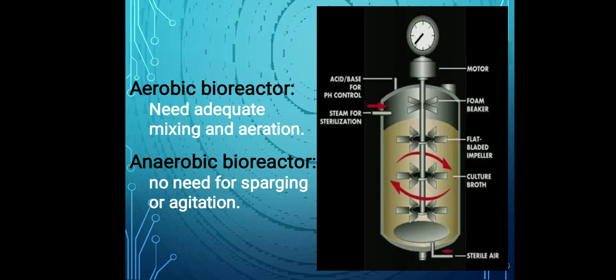Bioreactors are basically of two types: aerobic bioreactors and anaerobic bioreactors. As the name suggests, aerobic bioreactors need adequate mixing, aeration, and oxygen to grow the particular aerobic bacteria. For anaerobic bioreactors, there is no need for sparging or agitation, and no need for oxygen to grow.